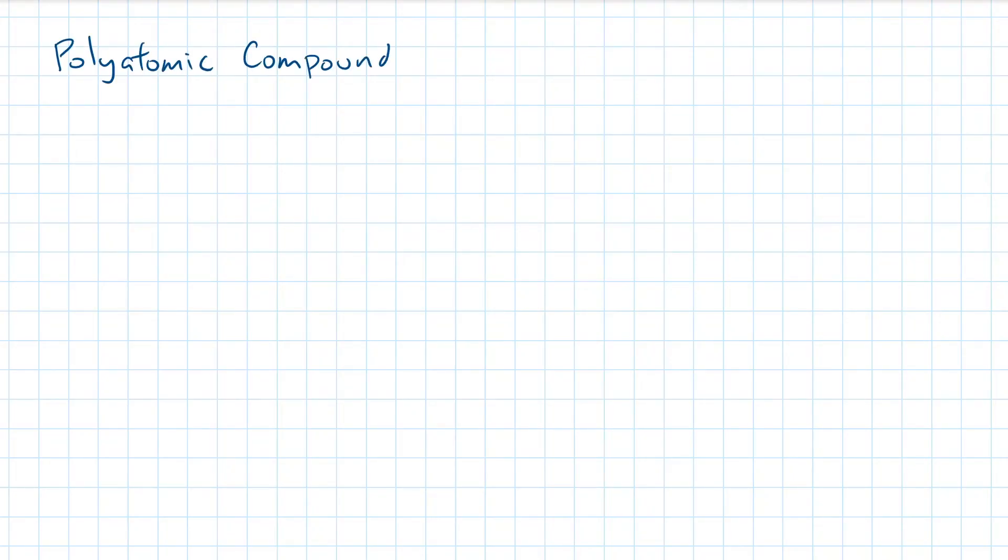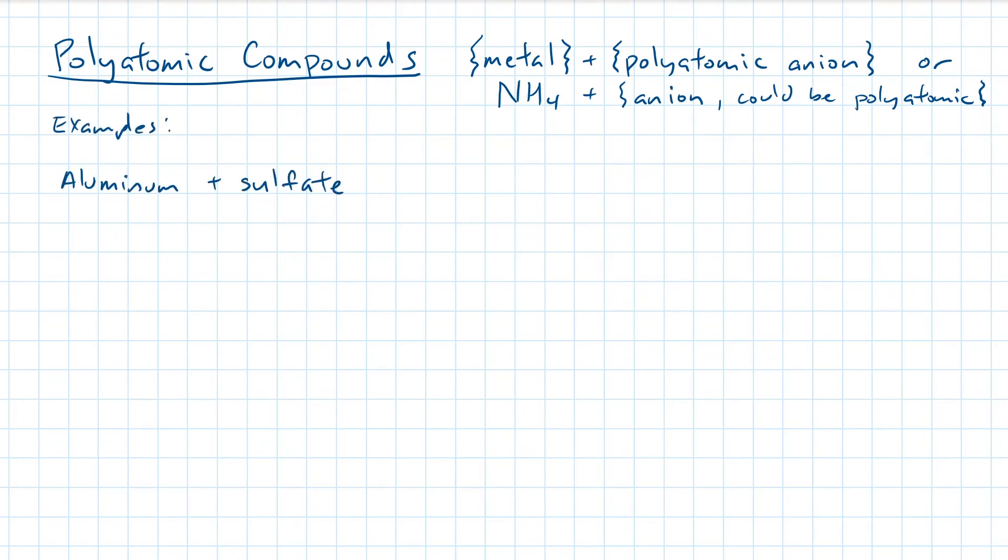As polyatomic ions are, well, ions, they still need a metal or a nonmetal to bind with to become chemically stable. Once they find that lucky spouse, together they will become a polyatomic compound. So let's go through a few examples, starting with aluminum and sulfate.